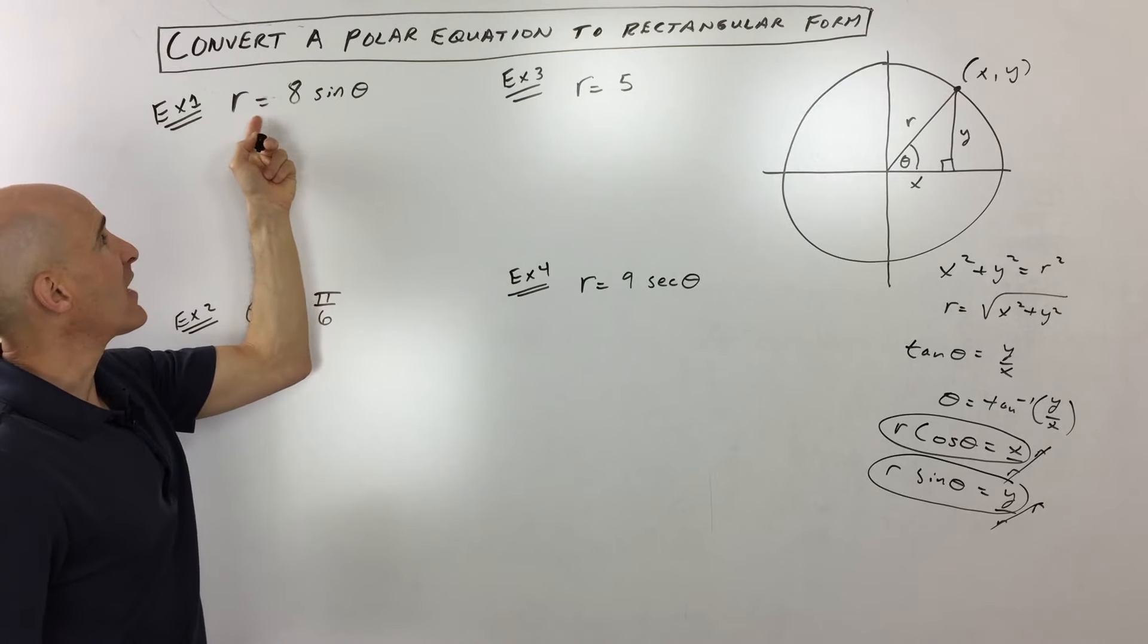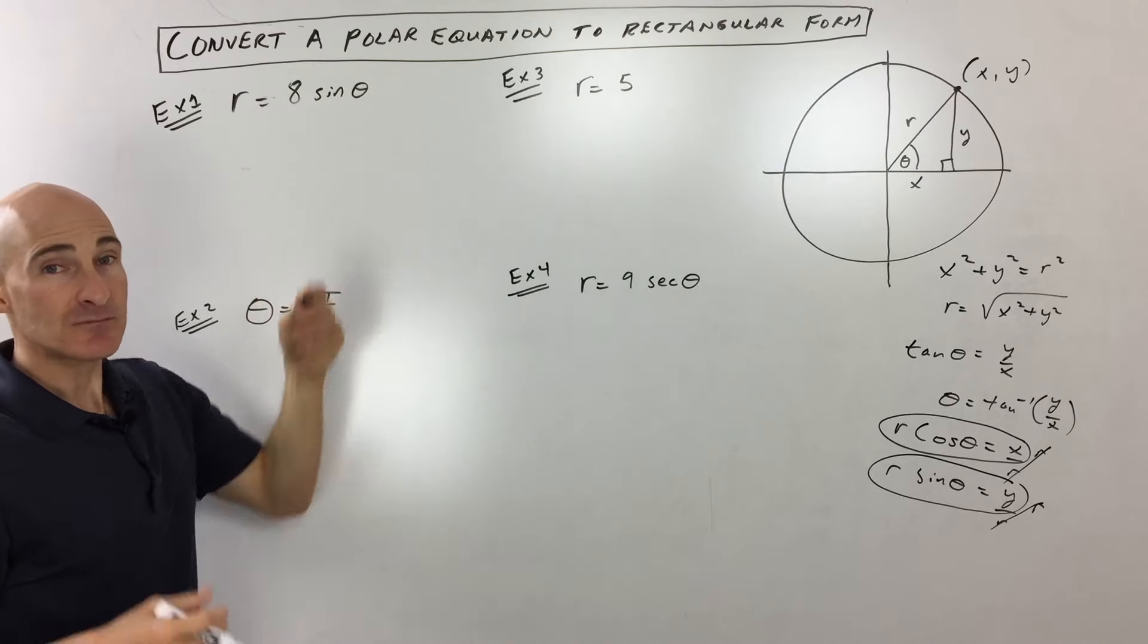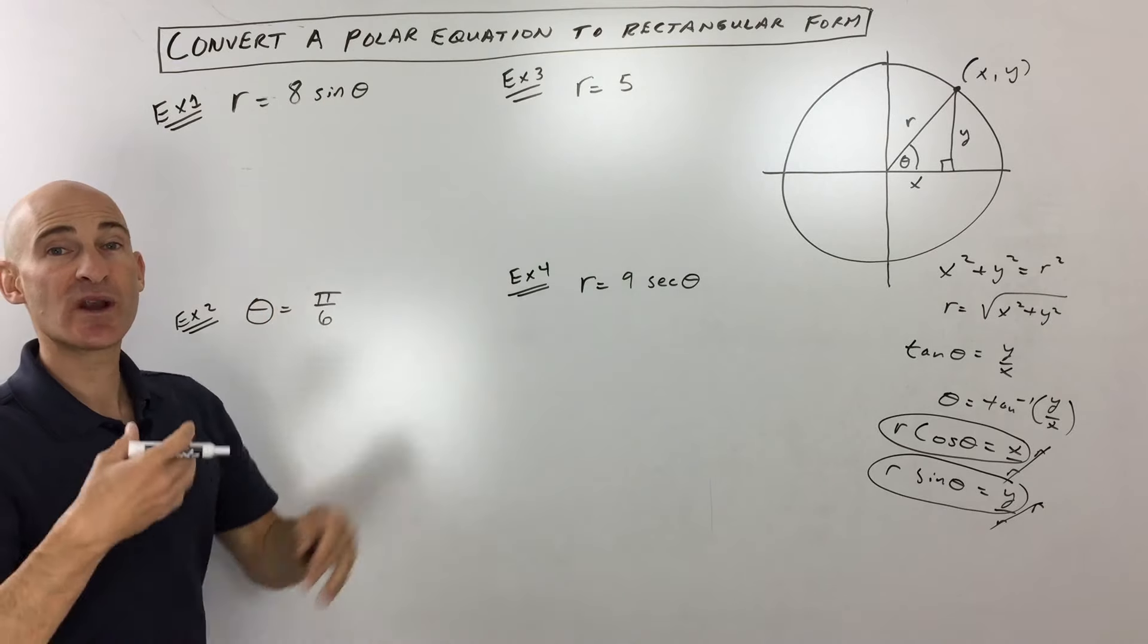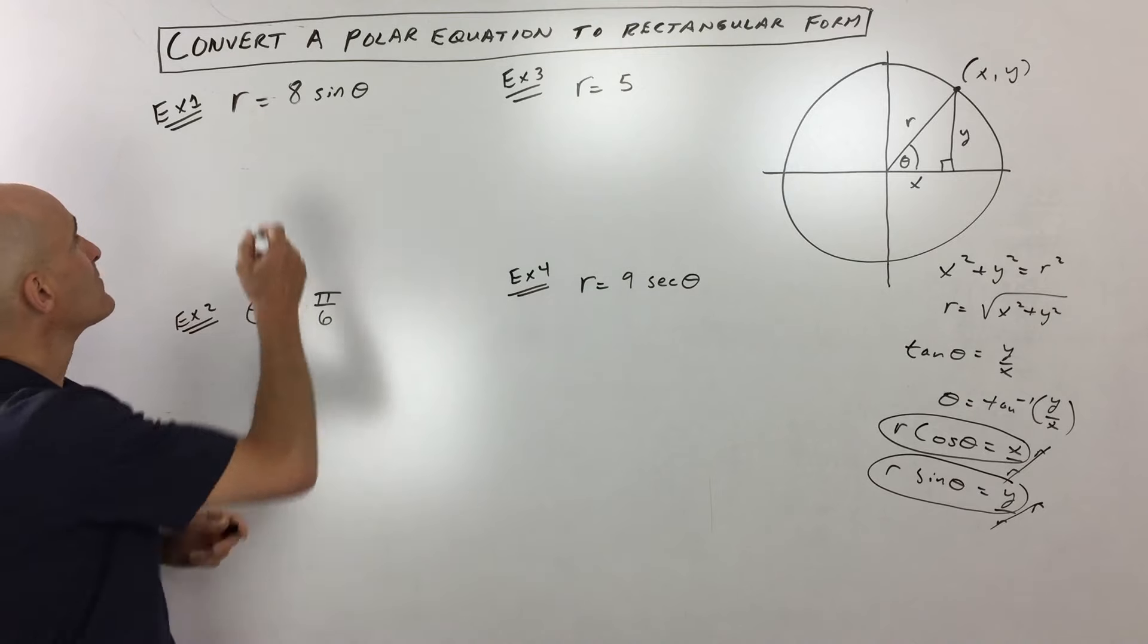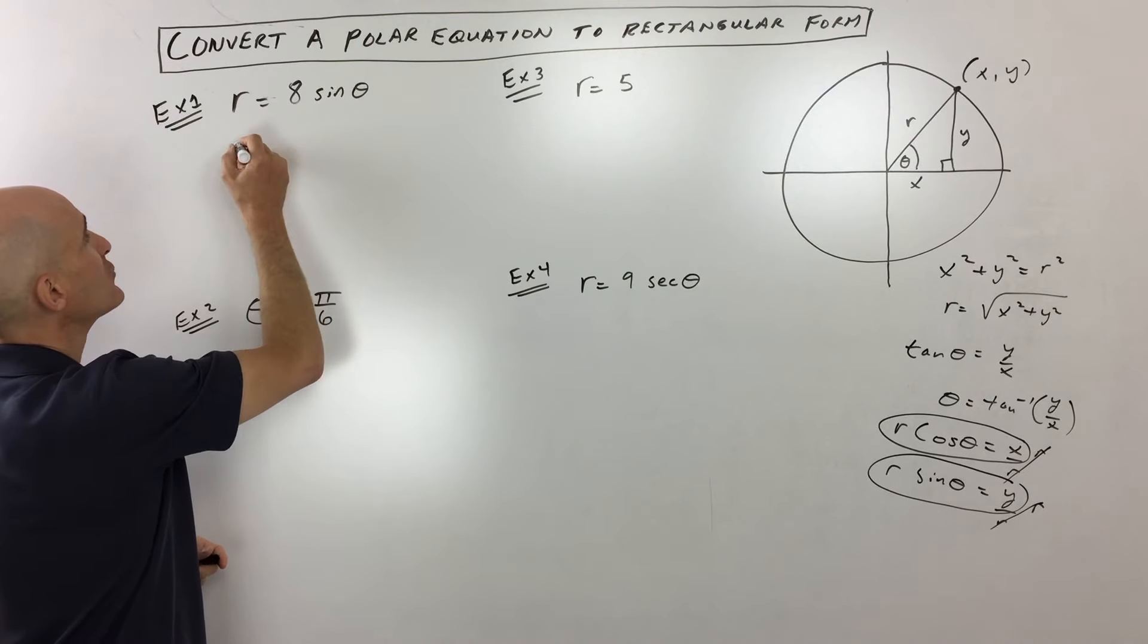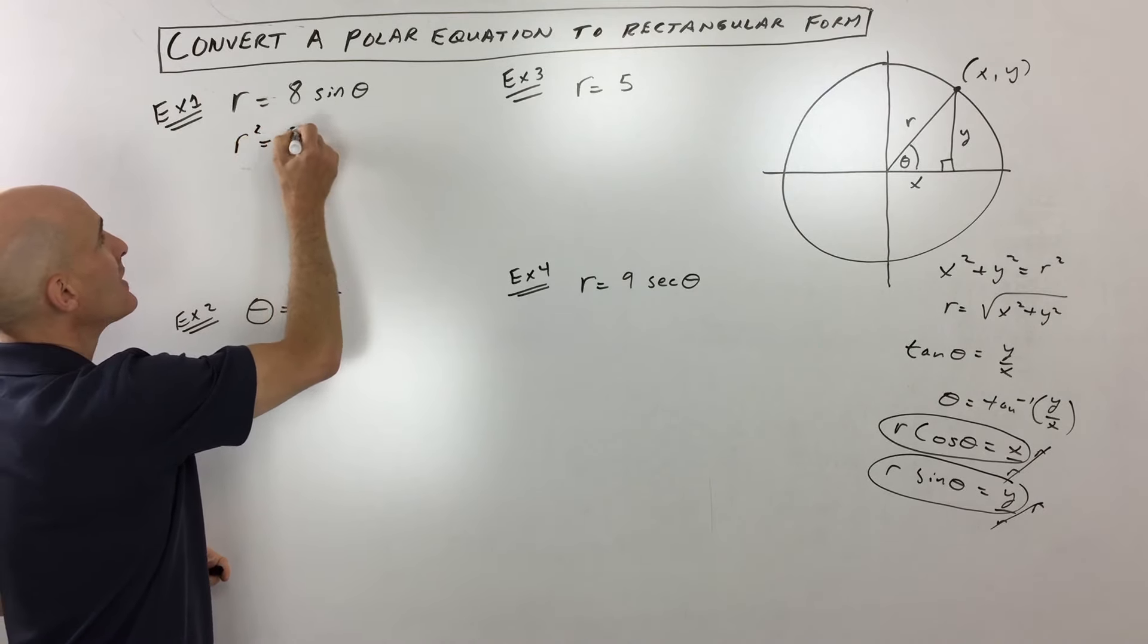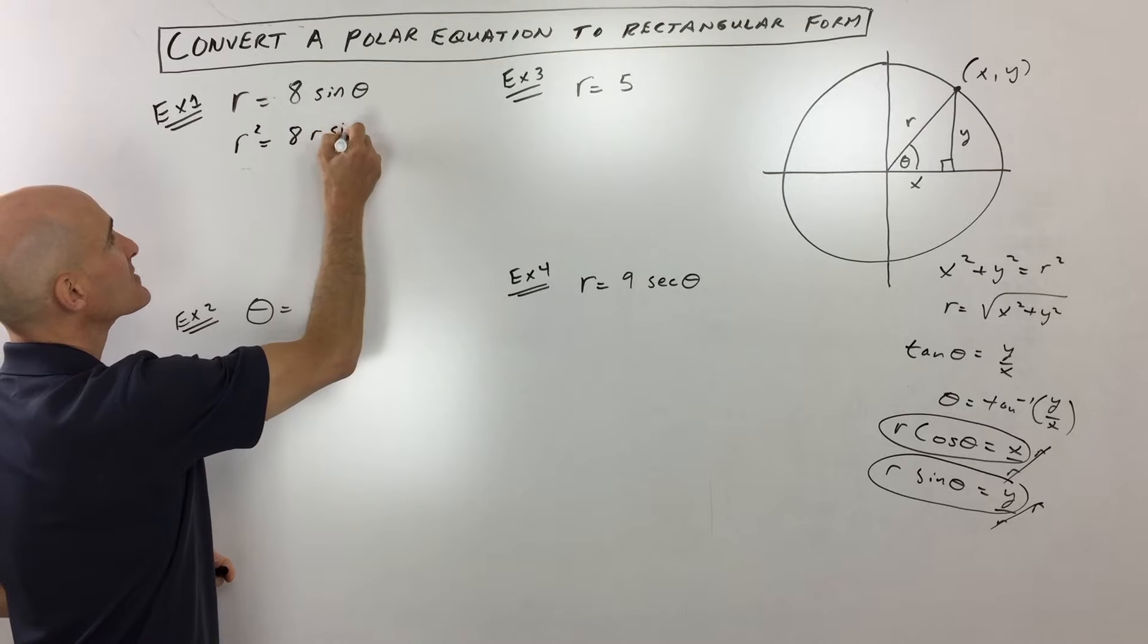So in our first example, you've got r equals eight sine theta. So what we want to do is we want to get rid of the r's and the thetas, we just want to end up with x's and y's when we're all done. So the first thing that I would do here is multiply both sides by r. If we do that, we get r squared equals eight r sine theta.